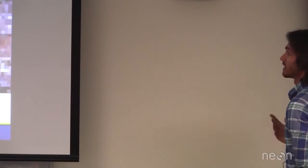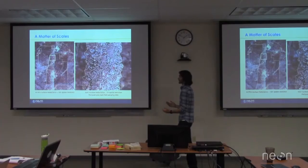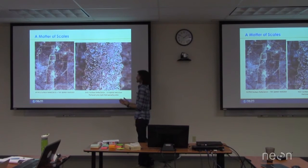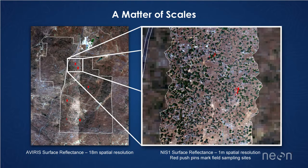And so as Nathan mentioned this morning, sort of a matter of scales. The advantage of our system is that since we're flying it on an airplane, we're able to get these nice 1 meter pixels, and we're able to get that really good high spectral resolution, those 5 nanometer bandwidths, compared to something like Avarice, which has a lower spatial resolution because generally they're flying higher, or satellite data because they're flying, or they're orbiting in space.